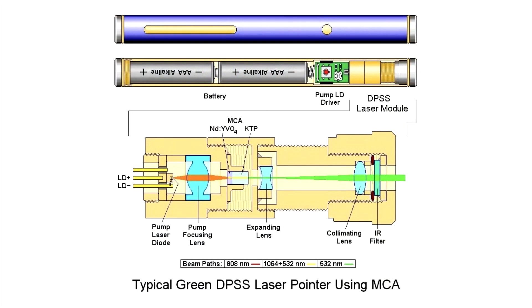This is where DPSS lasers come into play. The DPSS process allows us to build lasers that emit wavelengths that there are currently no diodes available to directly produce.